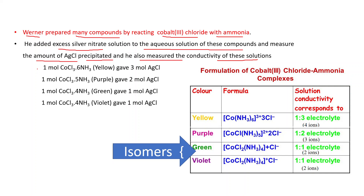These are the results: 1 mol of CoCl3·6NH3, which is yellow in color, gave 3 mol of AgCl. 1 mol of CoCl3·5NH3, which is purple in color, gave 2 mol of AgCl. 1 mol of CoCl3·4NH3, which is violet in color, gave 1 mol of AgCl.